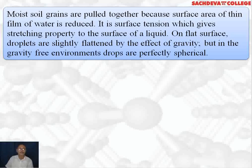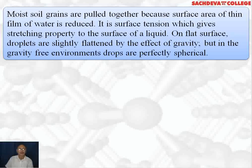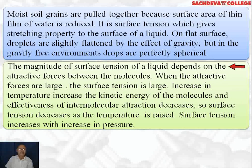Moist soil grains are pulled together because the surface area of the thin film of water is reduced — it is surface tension that gives the stretching property to the surface of a liquid. On a flat surface, droplets are slightly flattened by gravity, but in gravity-free environments drops are perfectly spherical. The magnitude of surface tension depends on attractive forces between molecules — mercury has higher surface tension than water because interatomic forces in mercury are much higher than intermolecular forces in water.